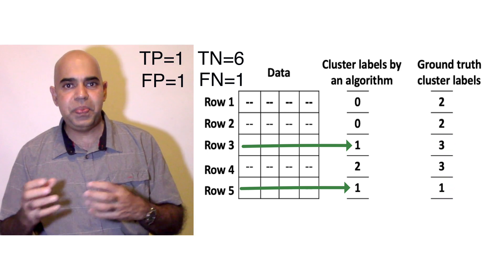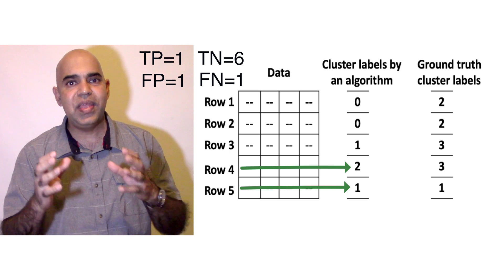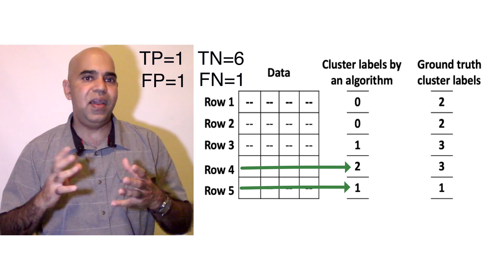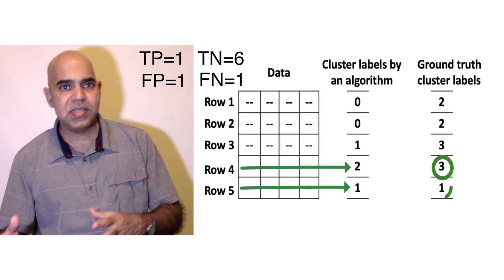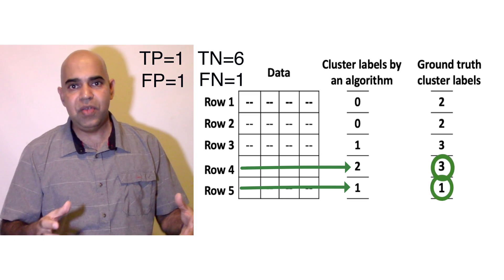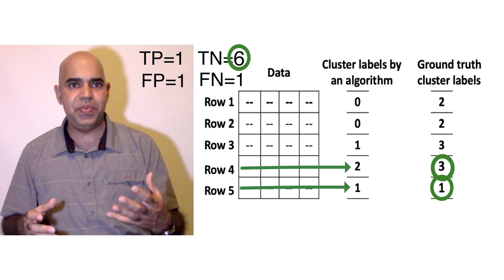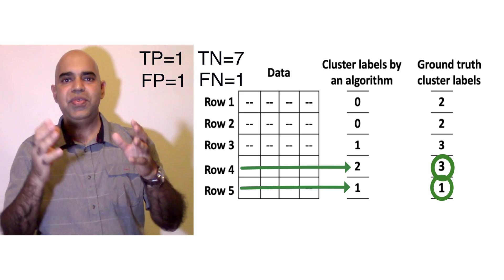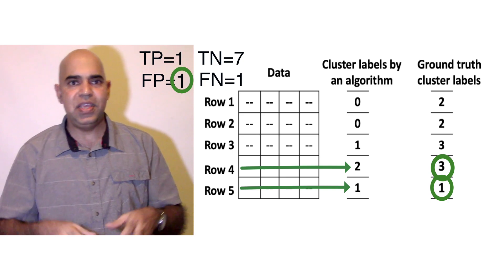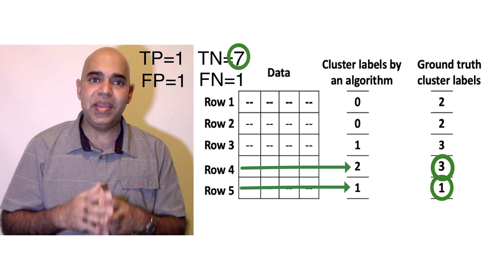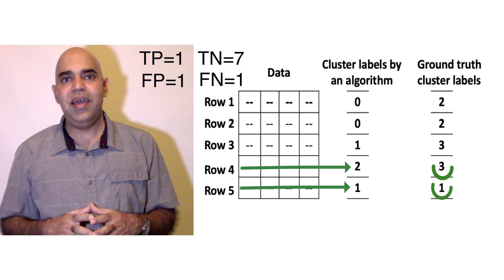The last pair is the fourth and fifth rows. They are in two different clusters in both the algorithmic results and ground truth. Therefore, this pair is a true negative pair. Let us update TN. We have a total of one true positive, one false positive, seven true negatives, and one false negative.